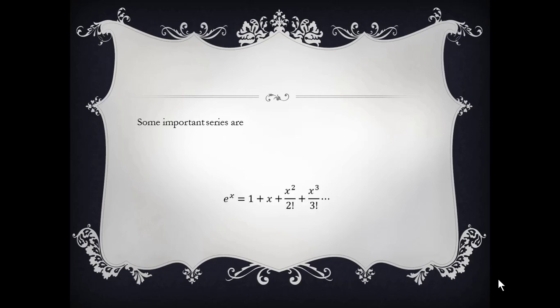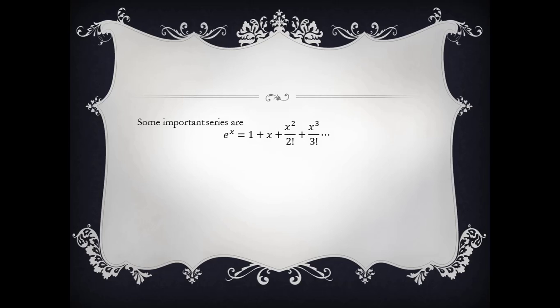We already know some important series. For example, the series expansion of the exponential function is given as 1 + x + x²/2! + x³/3! + ... You can see here that the constant C0 is equal to 1, C1 is equal to 1, C2 is equal to 1/2!, C3 is equal to 1/3!. Similarly, we can generalize that Ci must be 1/i!.